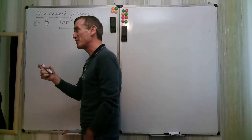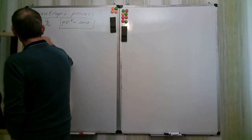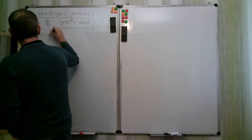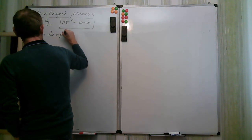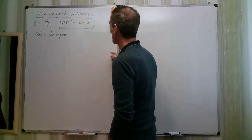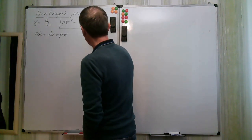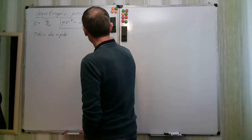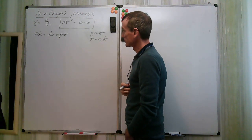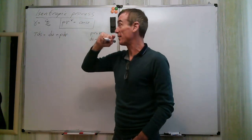Let's derive this. Going back to the central equation T ds = du + p dv, with du = cv dT and pv = RT for our ideal gas. For an isentropic process, ds = 0 — there's no change in entropy. That's what we mean by isentropic. Setting ds = 0, we get 0 = cv dT + p dv.